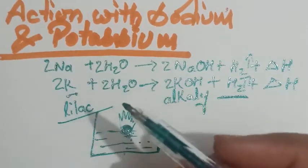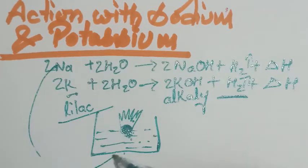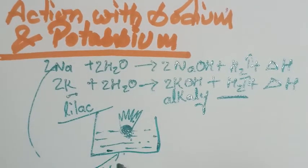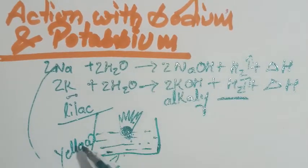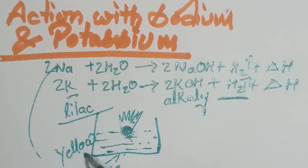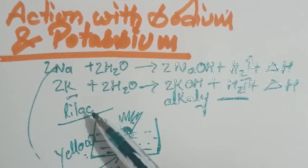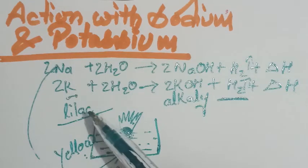Whereas in case of sodium it is yellow color flame. So in case of sodium the color of flame is yellow, whereas in case of potassium it is lilac flame, lilac means purple color flame.